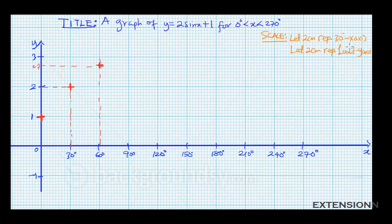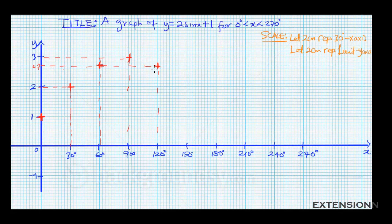When x is 90 degrees, y equals 3.0 — mark that point. When x is 120 degrees, y is 2.7 — mark that. When x is 150, y is 2 — mark that. When x is 180, y is 1 — mark that point.